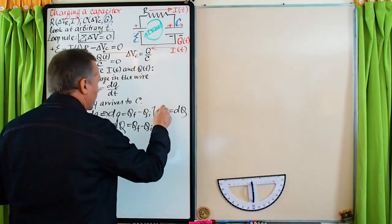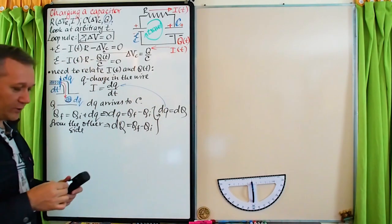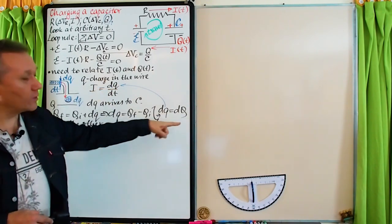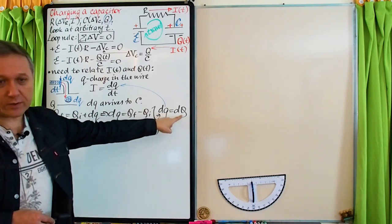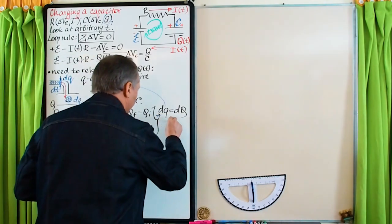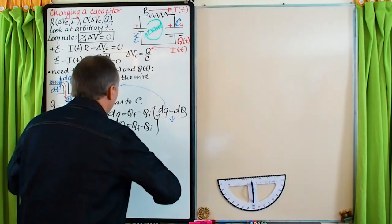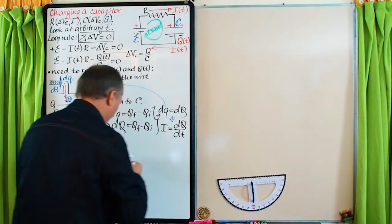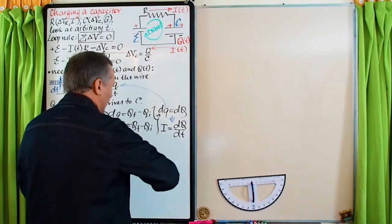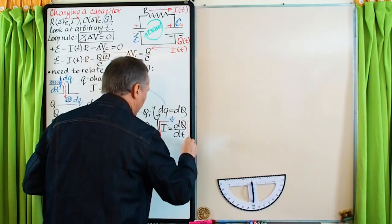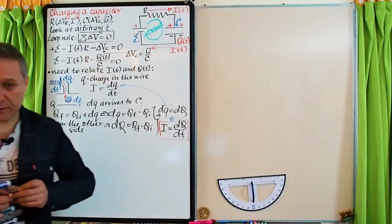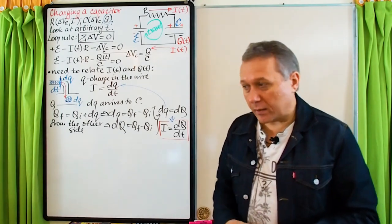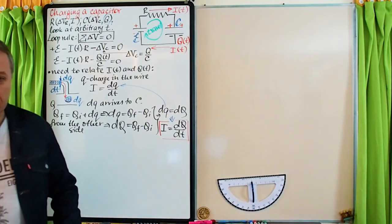We can now replace the small q in the definition of current with the capital Q (charge in the capacitor). As a result, current I equals dQ/dt. This is how the charge in the capacitor and the current in the wire are related. In the discharging case there is a minus sign between them.